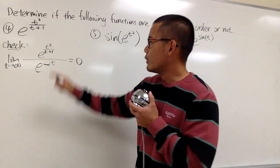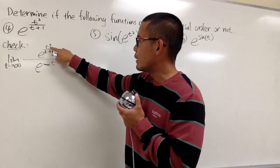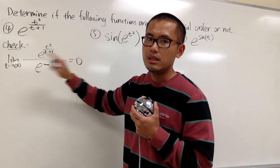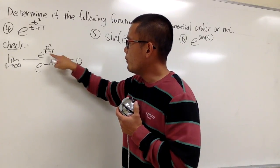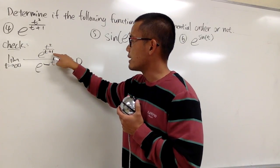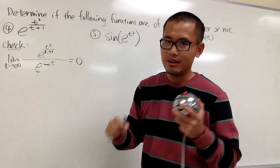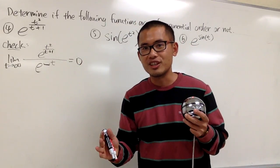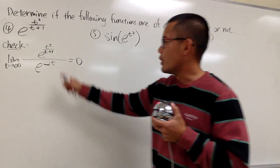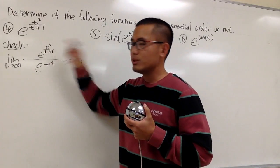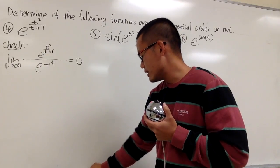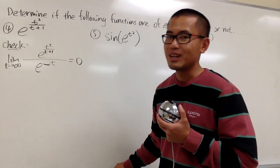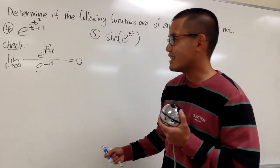We do notice that we have the t squared in the exponent of e, but this is t squared over t plus 1. Therefore, we have a better chance. The way to handle this is we are going to do some long division.